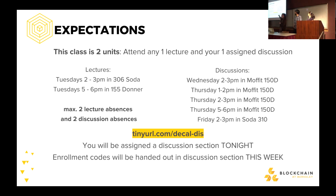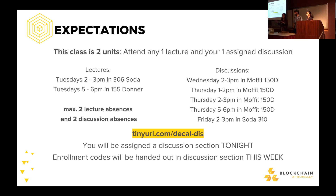There is a discussion section form — I hope you all filled it out. This week in discussion section, you will be getting your enrollment codes. You should enroll before September 8th if you don't want a fee. You can miss two lectures and two discussion sections max. After that, we will start lowering your attendance score and your grade is in jeopardy.